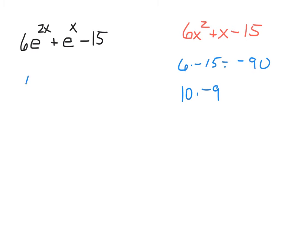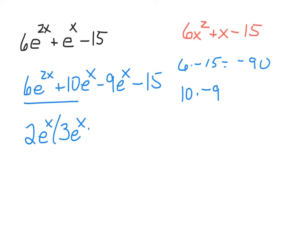So now I'm going to rewrite that. So then it's going to be 6e to the 2x plus 10e to the x minus 9e to the x minus 15. And now all you're doing is grouping the first two terms and taking out whatever you can. And that is going to be a 2e to the x. When you factor that out, you'd be left with a 3e to the x plus 5.